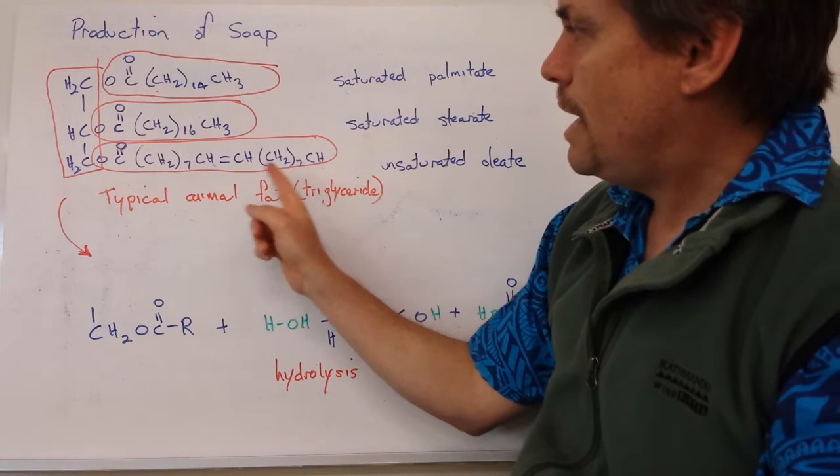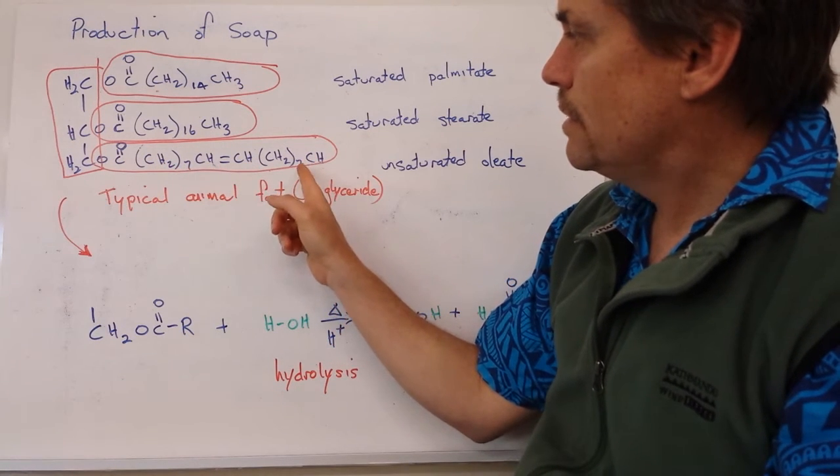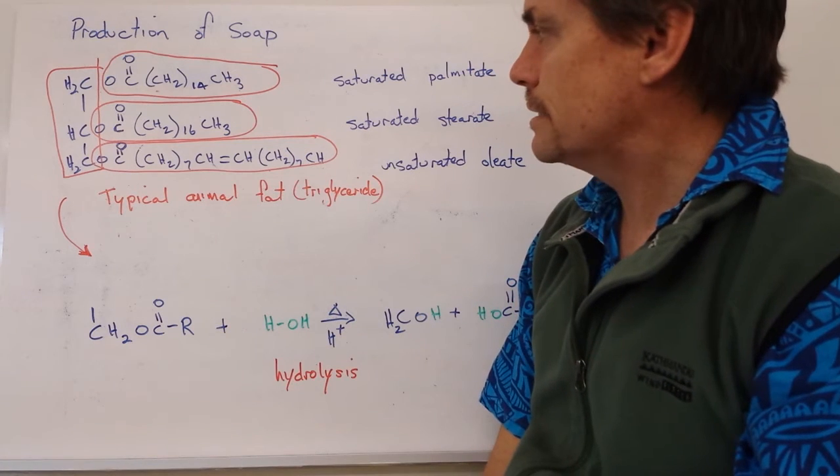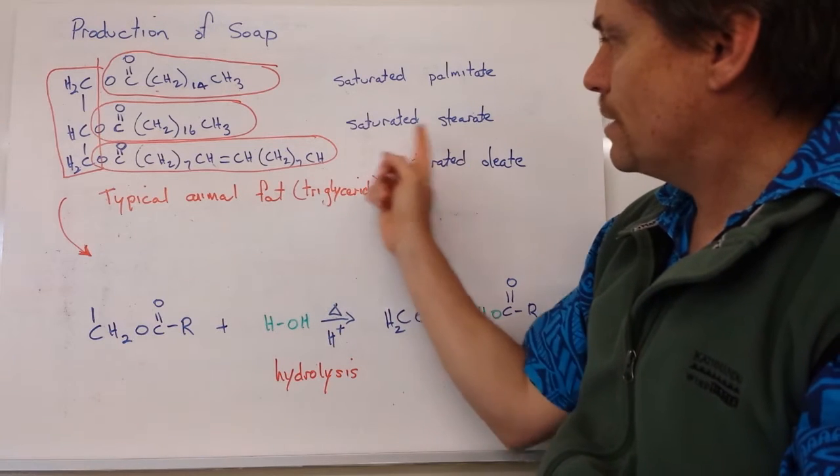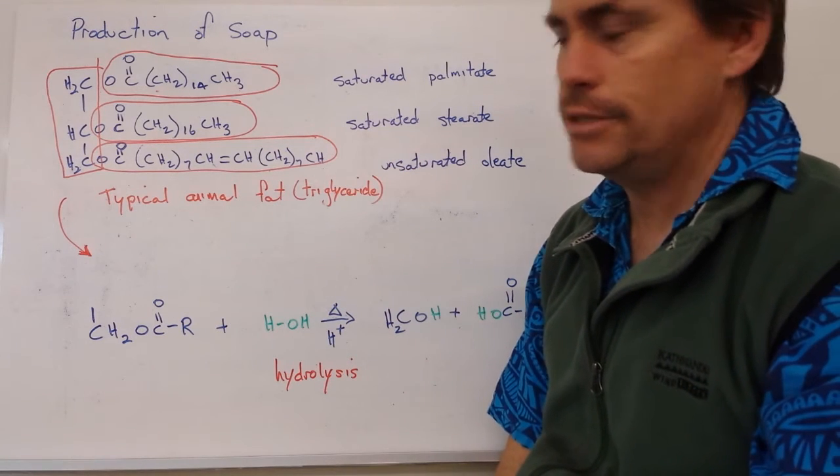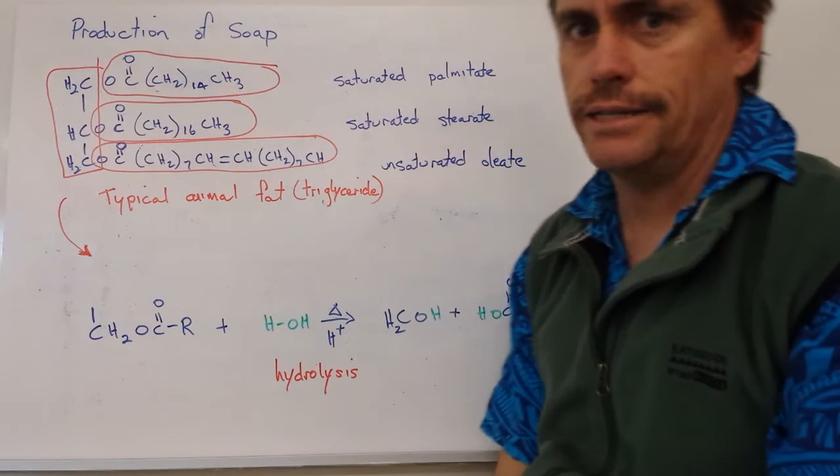And our last example has 1, 8, 9, 10, 11, 18 carbons in its chain. It's also got a double bond, so this time we've got an unsaturated carbon chain. And because it's got 18 carbons, it's an oleate derivative.